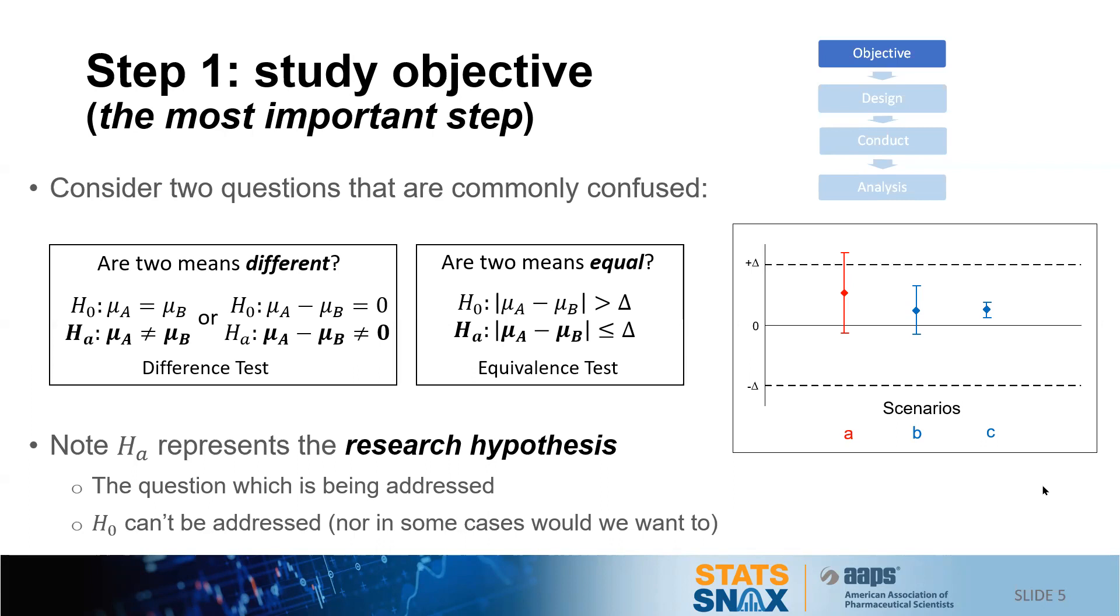Now you'll notice that these confidence intervals get narrower and narrower as I go across scenarios, and I'll show in a moment that the width of the confidence interval is associated with successfully supporting the research hypothesis. And this is the basis of the second step of the scientific method, that is study design.